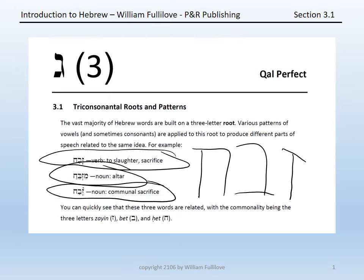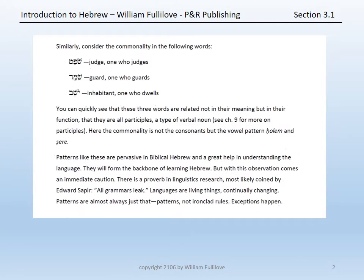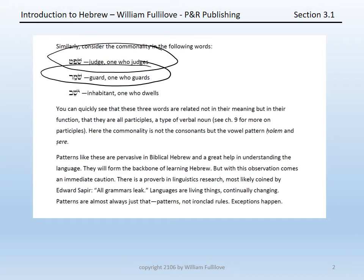That meaning relates to the combination of the three consonants zayin, beit, and het. Similarly, but with a different way that they combine, consider these three words: shofet, a judge or one who judges; shomer, a guard or one who guards; and yoshev, an inhabitant or one who dwells.